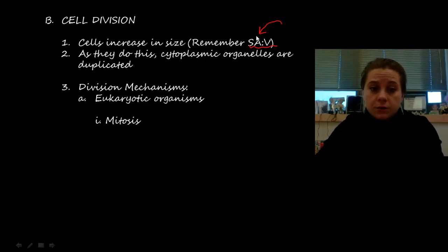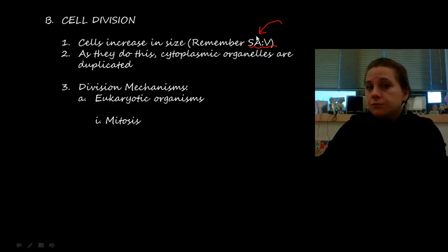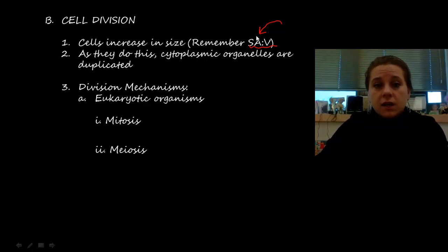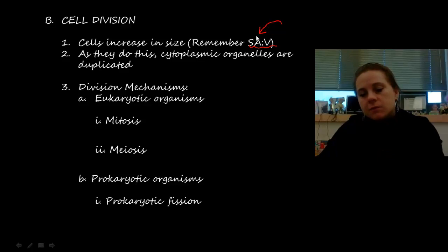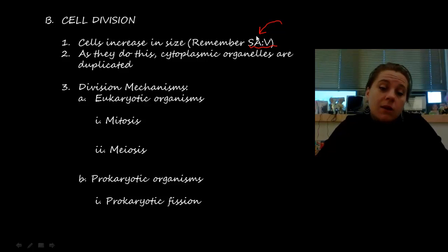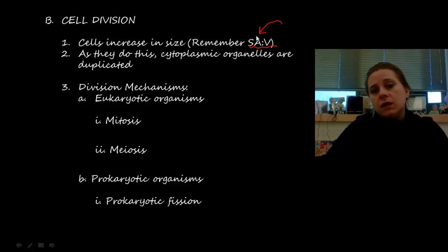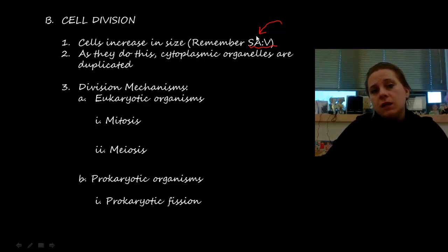There are a couple of ways cells divide. In eukaryotes like us, cells go through mitosis — a single division process where a cell splits into two cells identical to the original. There's also meiosis, which creates gametes, the sex cells that fuse to create new offspring. Prokaryotes like bacteria go through prokaryotic fission, which is similar to mitosis but given a different name because their DNA is arranged differently.